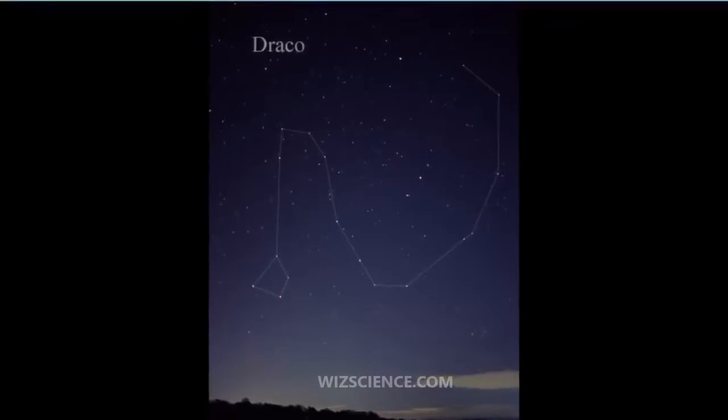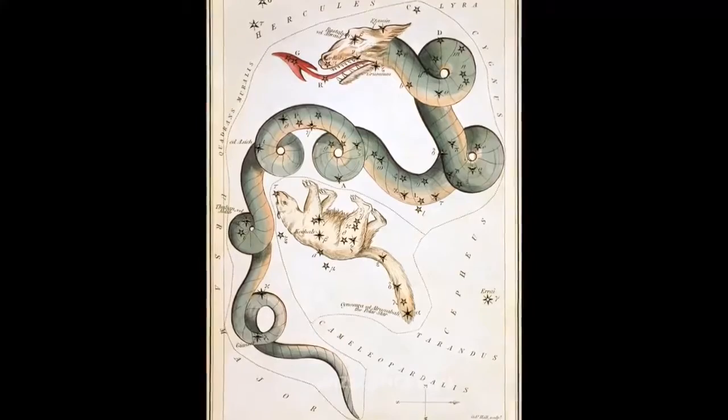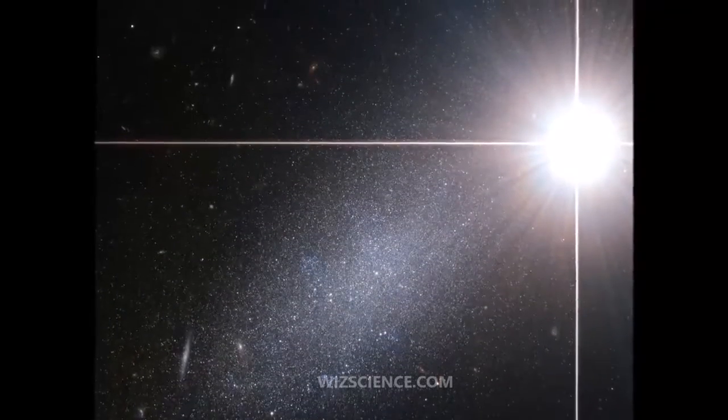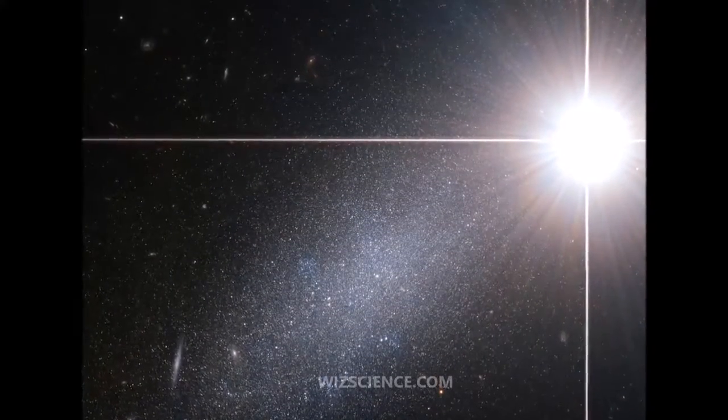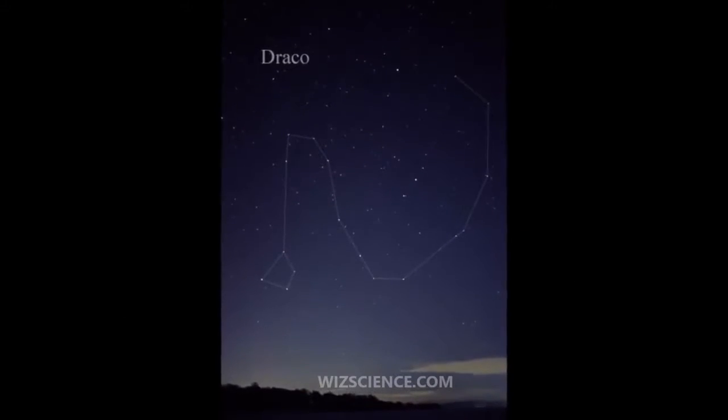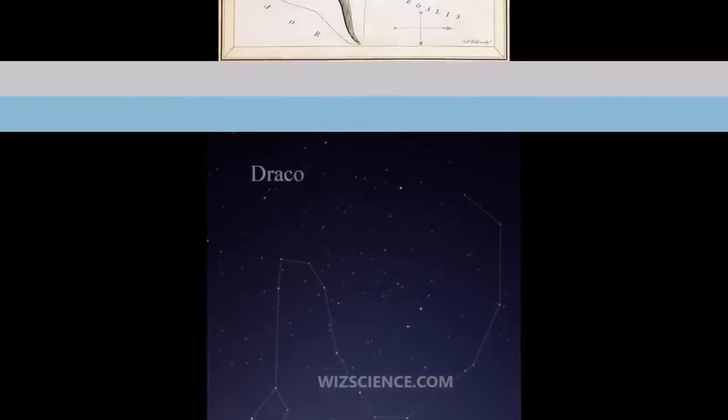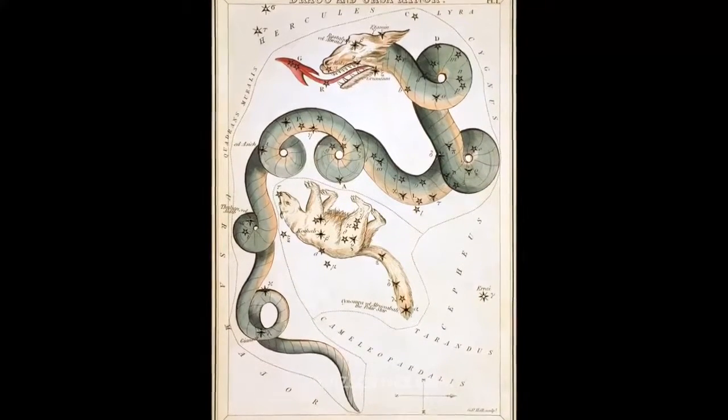39 Draconis is a triple star 188 light-years from Earth, divisible in small amateur telescopes. The primary is a blue star of magnitude 5.0. The secondary is a yellow star of magnitude 7.4 and the tertiary is a star of magnitude 8.0. The tertiary appears to be a close companion to the primary.